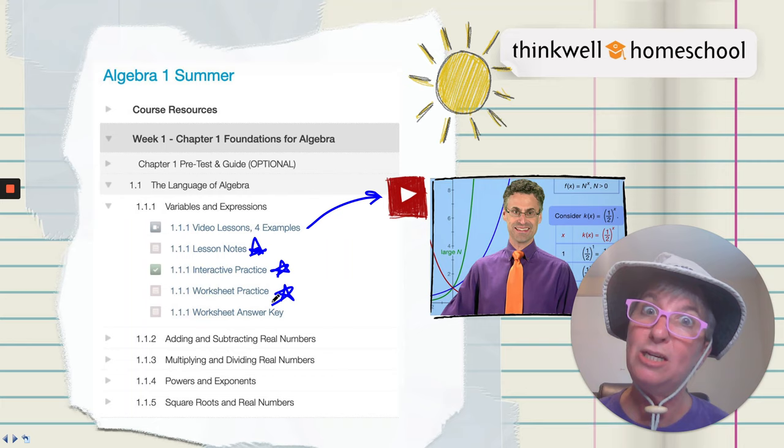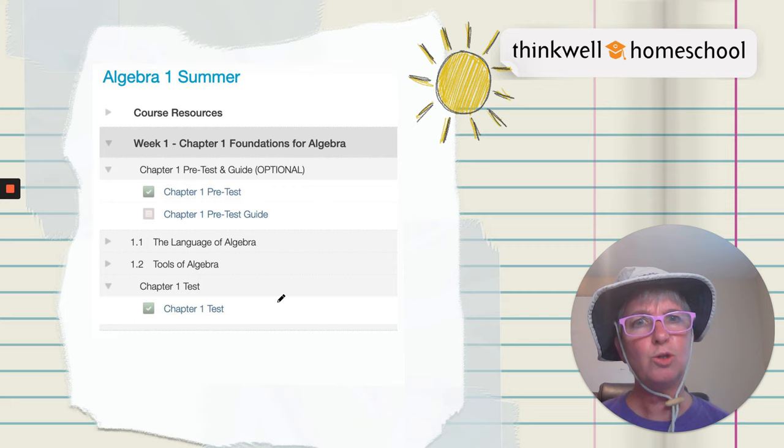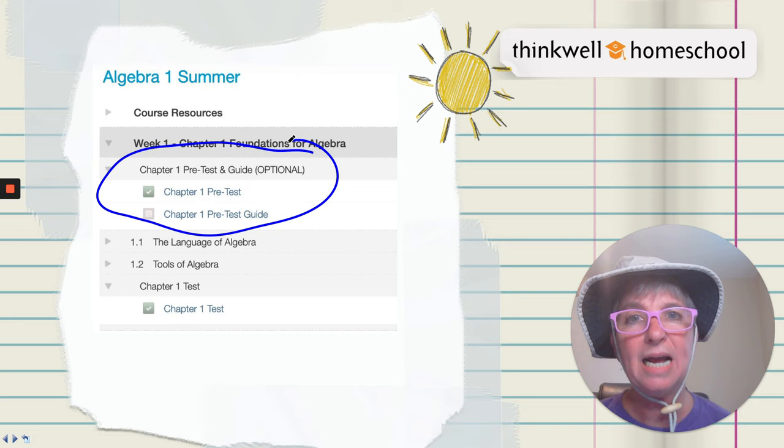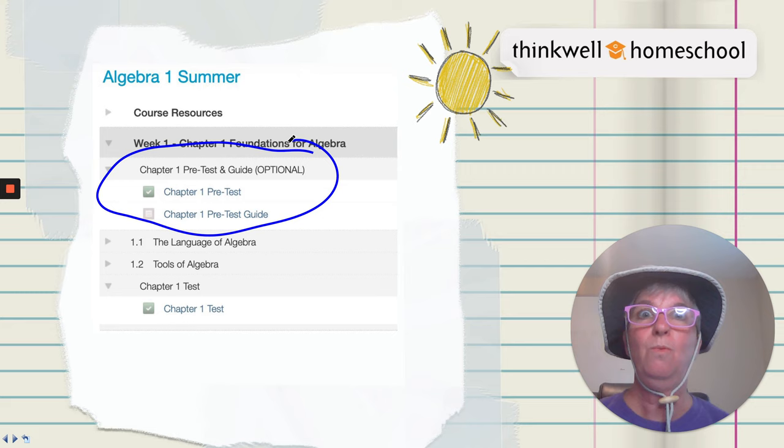What kind of things do we have that you could do if, let's say, you're short on time? Well, we have this wonderful optional pre-testing guide for every chapter. You take that pre-test, answer all the questions, and then look at the guide to see which topics you got right. Then you can skip those topics. Wow, what an option.